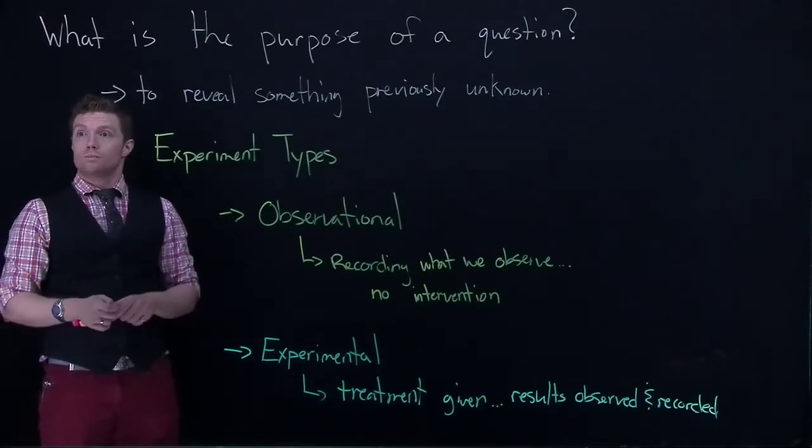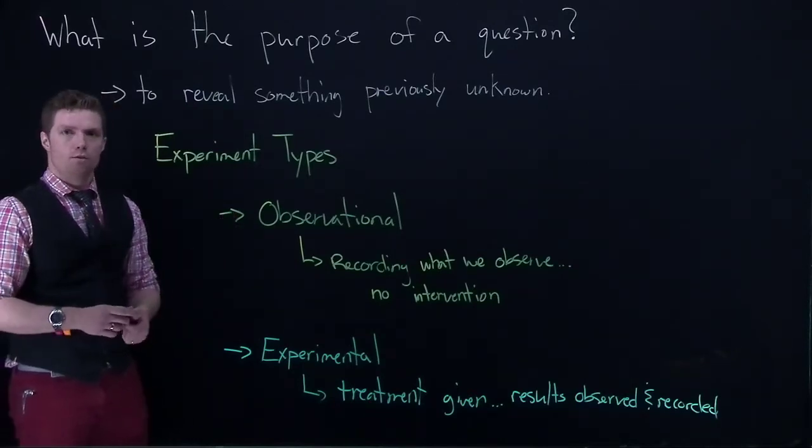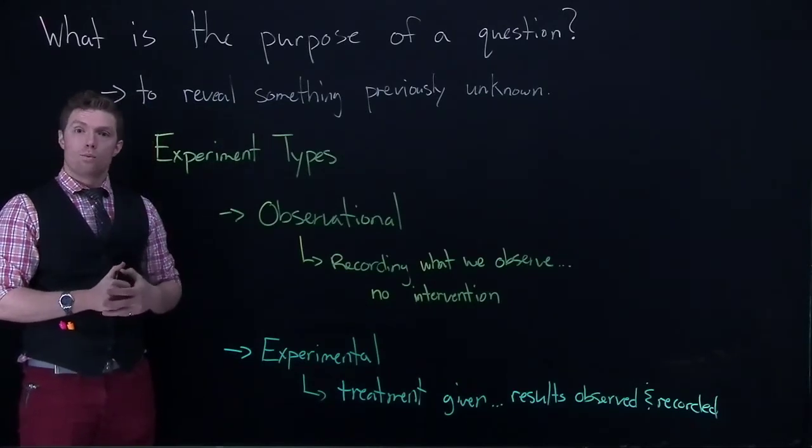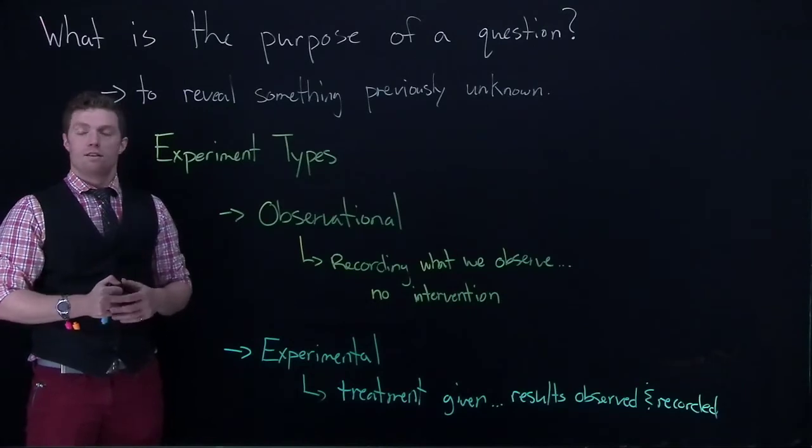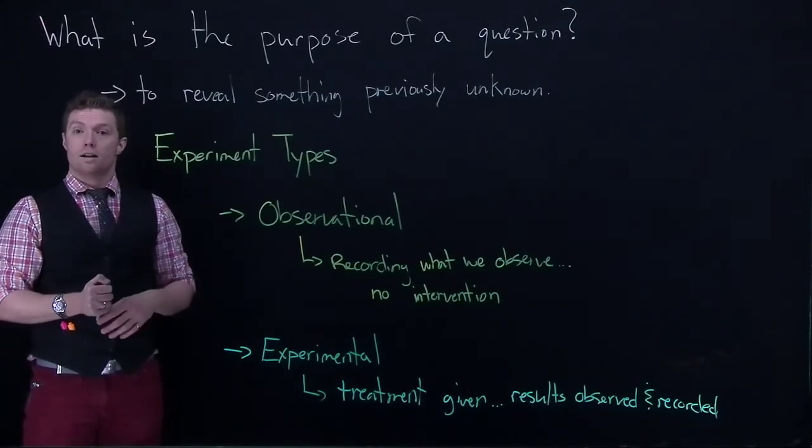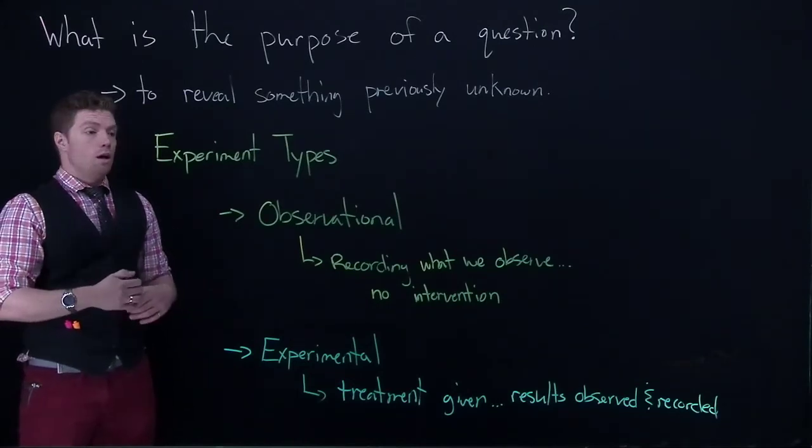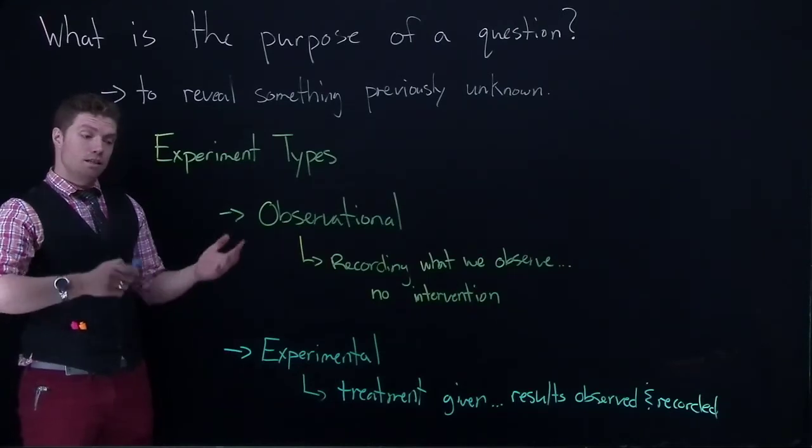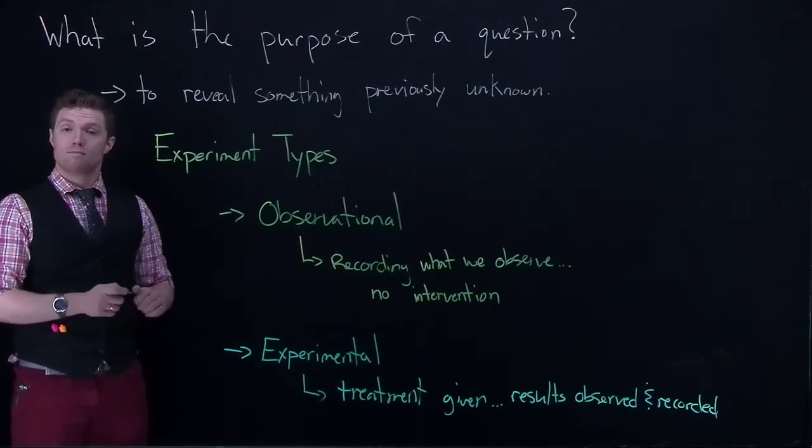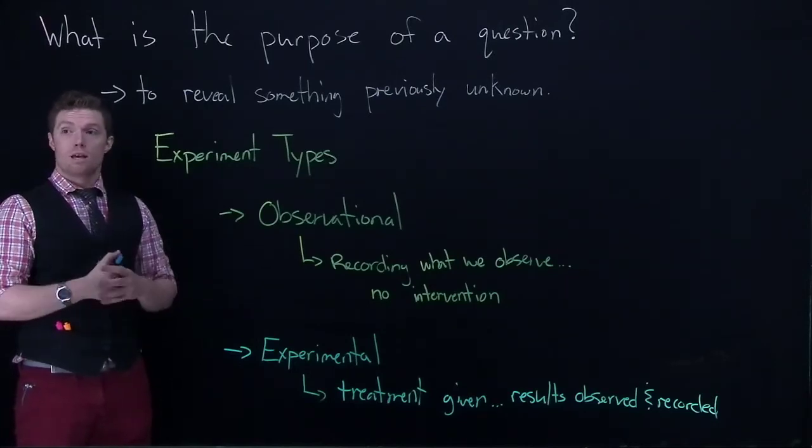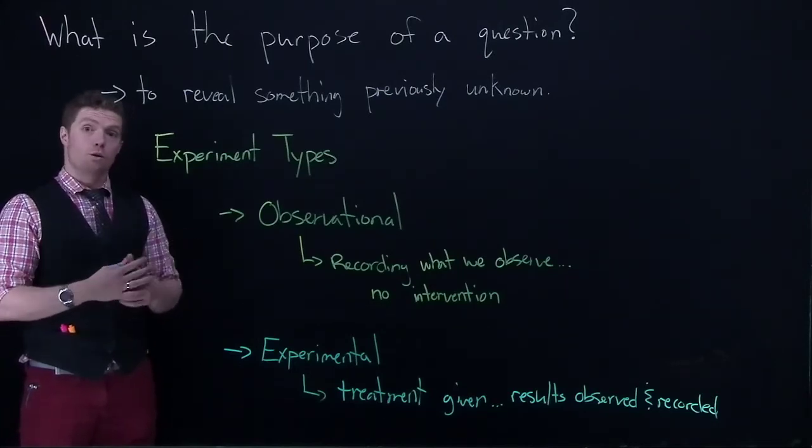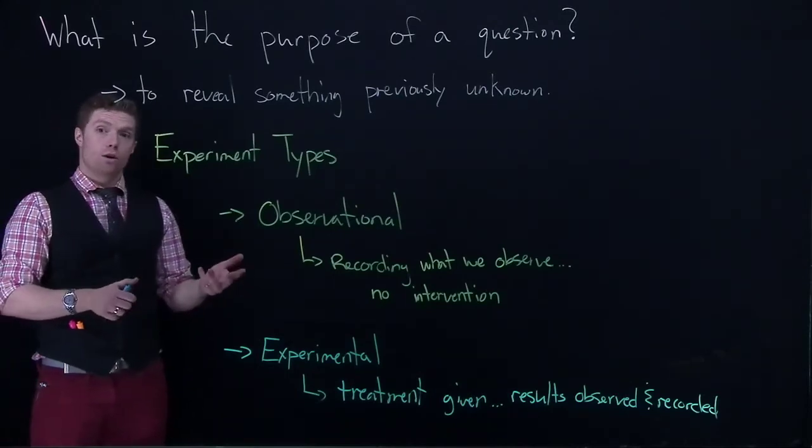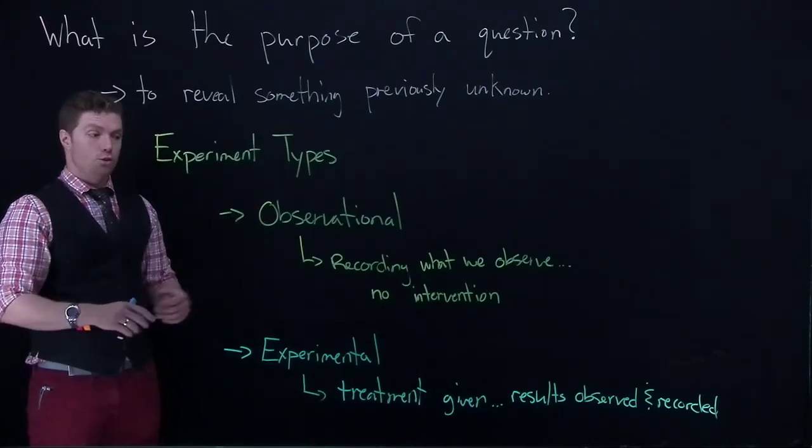So let me give you an example for observational of why we couldn't do one for experimental. So let's suppose that we wanted to determine the effects of smoking on a fetus. Okay, so if we wanted to run an experiment we would have to then like randomly select a bunch of pregnant women, put them into two groups, and then we say group A is not going to smoke over the course of their pregnancy and group two is going to be forced to smoke over the course of their pregnancy.